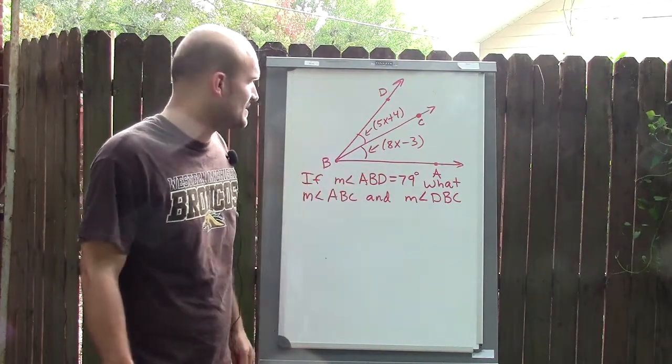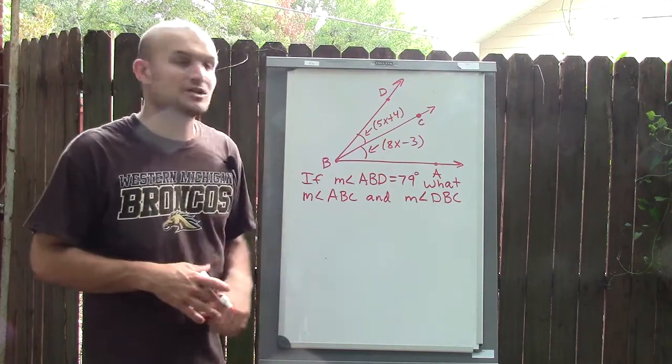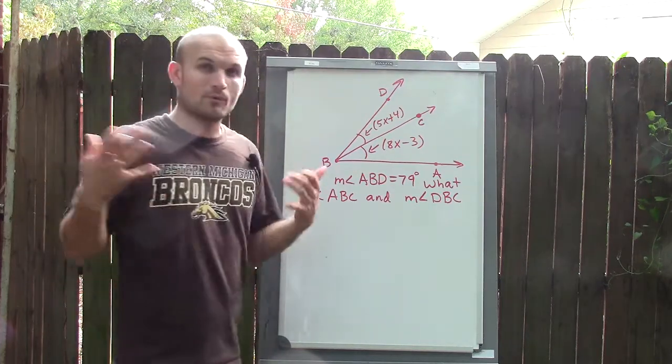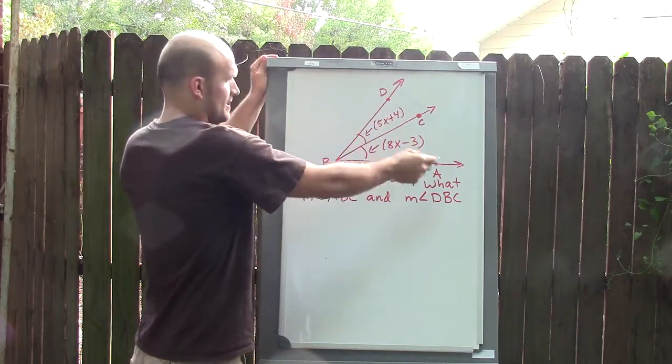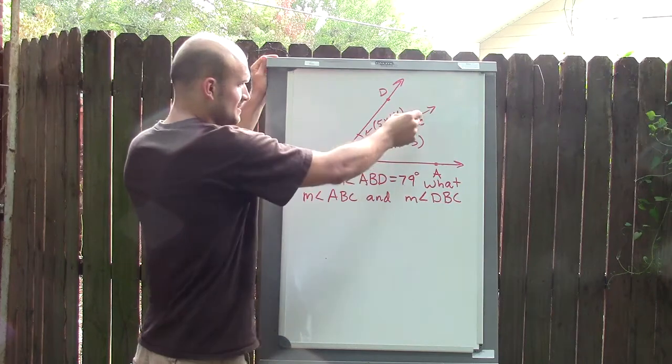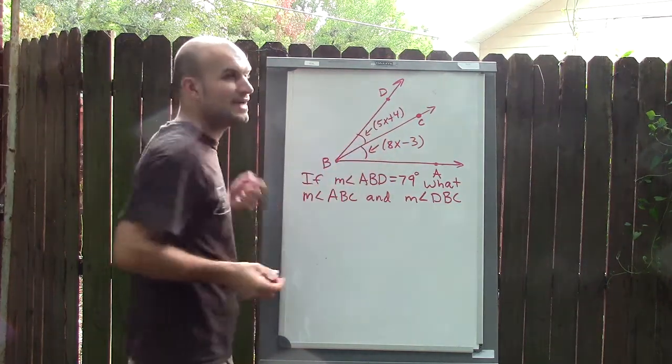This problem is asking us: if we know the measure of angle ABD is equal to 79 degrees, then what is the measure of angle ABC and what is the measure of angle DBC? Remember, when we're naming angles, we need to find the measure of angle A to B to C and also DBC.